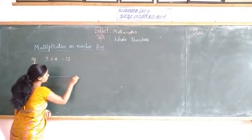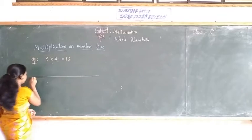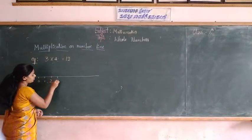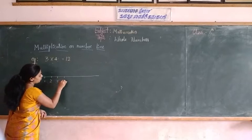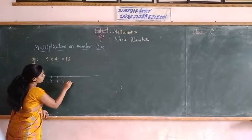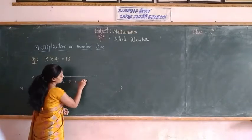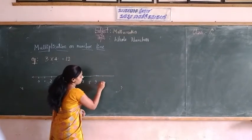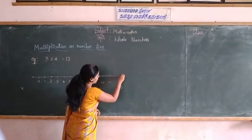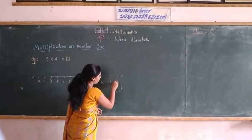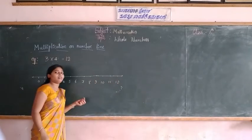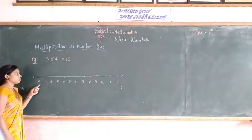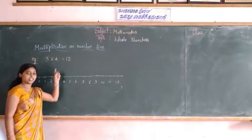Draw a number line and make points on it: 0, 1, 2, 3, 4, 5, 6, 7, 8, 9, 10, 11, and 12. We know that when we do addition or subtraction, we start from 0. This method also applies to multiplication.